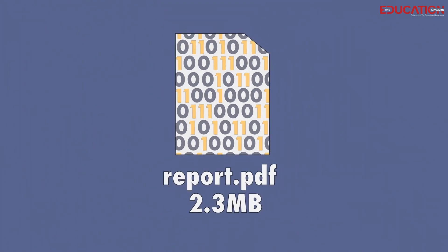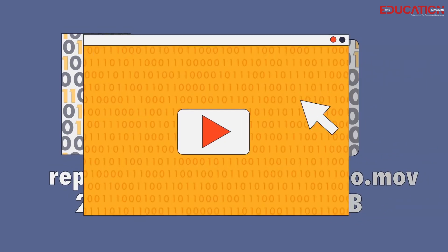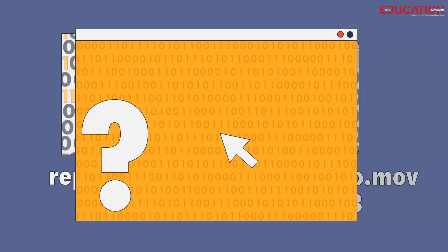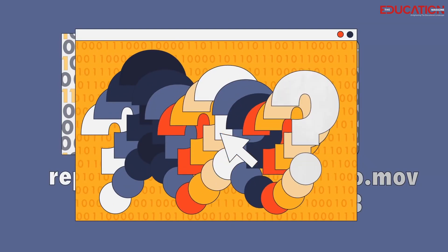Binary code is used to represent data in computers. Every piece of data in a computer, from numbers to letters to images, is stored as a sequence of binary digits.